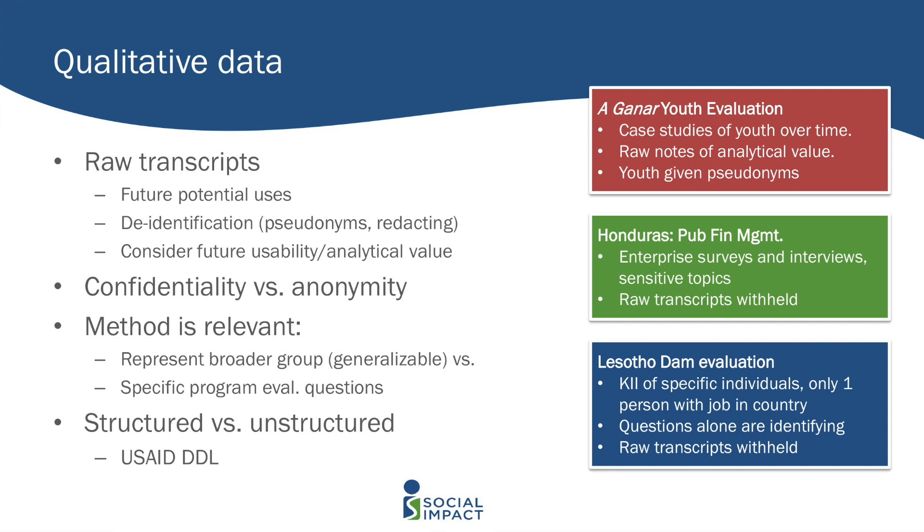In a case where you're doing 50 focus group discussions meant to represent a broader population, you can see that having analytical use for others makes sense. But in a case where you're doing five or ten key informant interviews with high-level officials or political appointees specifically to answer questions about a particular program, that might not have as much analytical value for other researchers. Besides that, the questions themselves might serve to identify somebody — if there's only one CEO of the utility in the country, then the questions you're asking are themselves identifiers. In these kinds of cases, you don't necessarily want to release the raw data. If the analytical use is relatively low and the risk to respondents is relatively high, that kind of thing gets withheld. Where you can give pseudonyms or mask information, the justification for releasing that might be a bit higher.